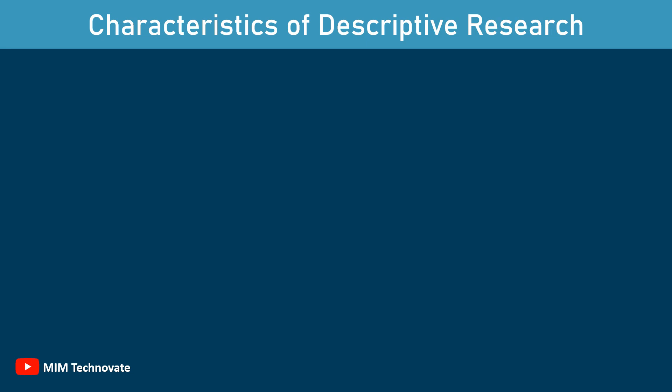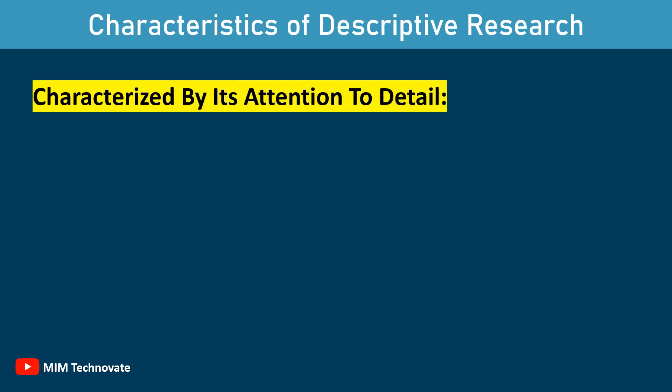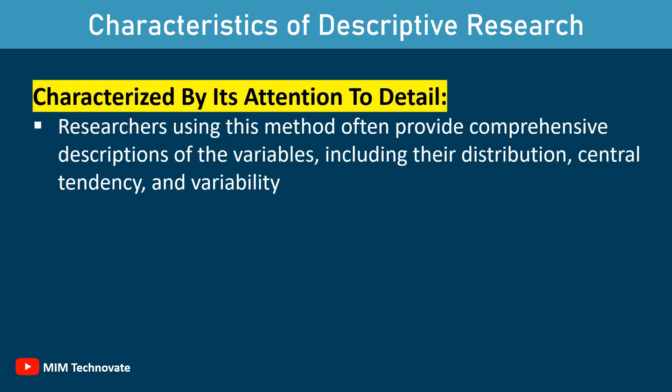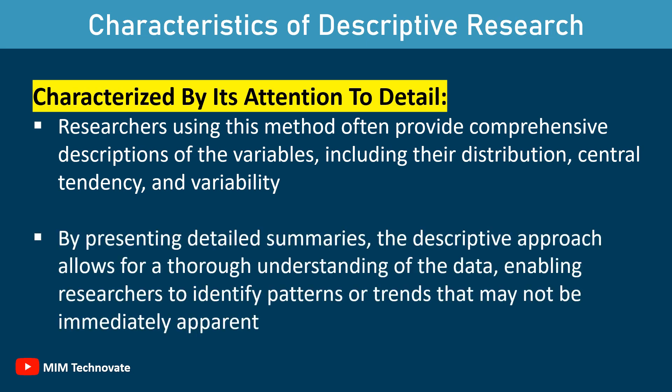Descriptive research is also characterized by its attention to detail. Researchers using this method often provide comprehensive descriptions of the variables, including their distribution, central tendency, and variability. By presenting detailed summaries, descriptive research allows for a thorough understanding of the data, enabling researchers to identify patterns or trends that may not be immediately apparent.